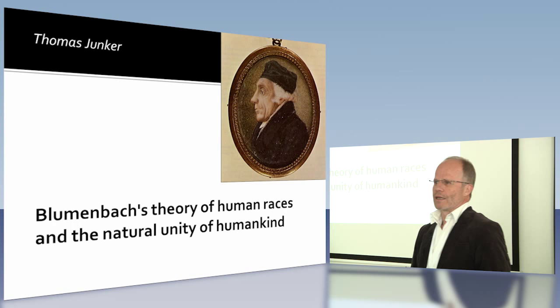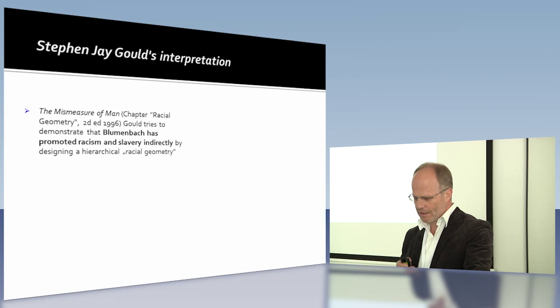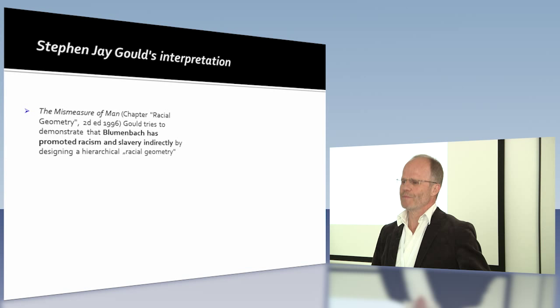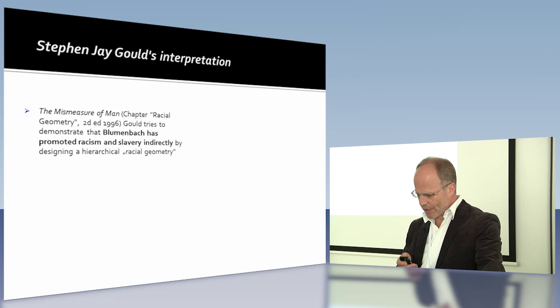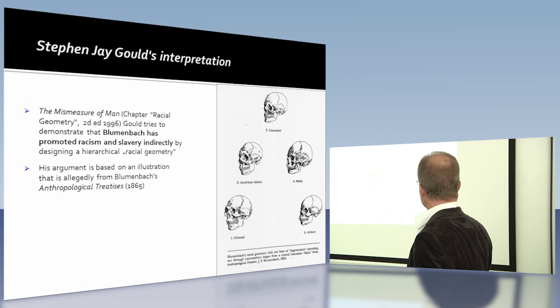I first came into contact with Blumenbach through Stephen Jay Gould. I was a fan of Stephen Jay Gould and read his Mismeasure of Man, second edition, and I used this in a seminar. There Gould demonstrated that Blumenbach had promoted racism and slavery by designing a hierarchical racial geometry. In the course of his argument, he brings this illustration — you have seen from Bob Richards already — where he claims this is from the anthropological treatises by Blumenbach.